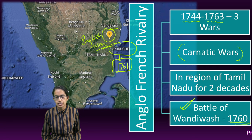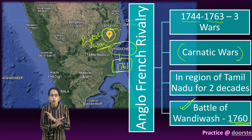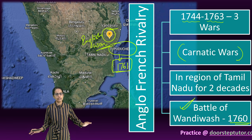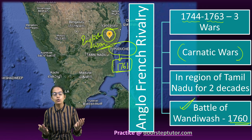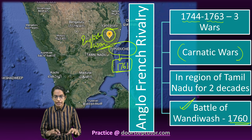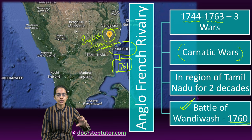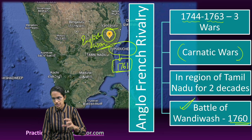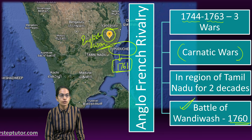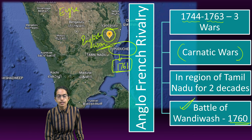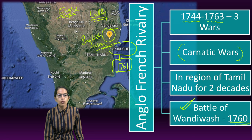In 1761, the French lost all their positions in India. The final position went to the English and that was Pondicherry in 1761. At the Battle of Wandiwash, it was General Eyre or Lord Eyre who actually defeated Lally, who was French.